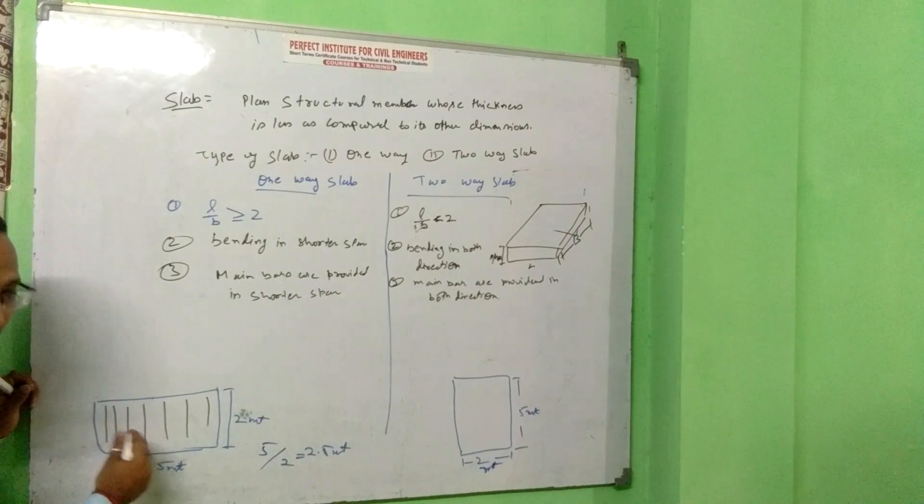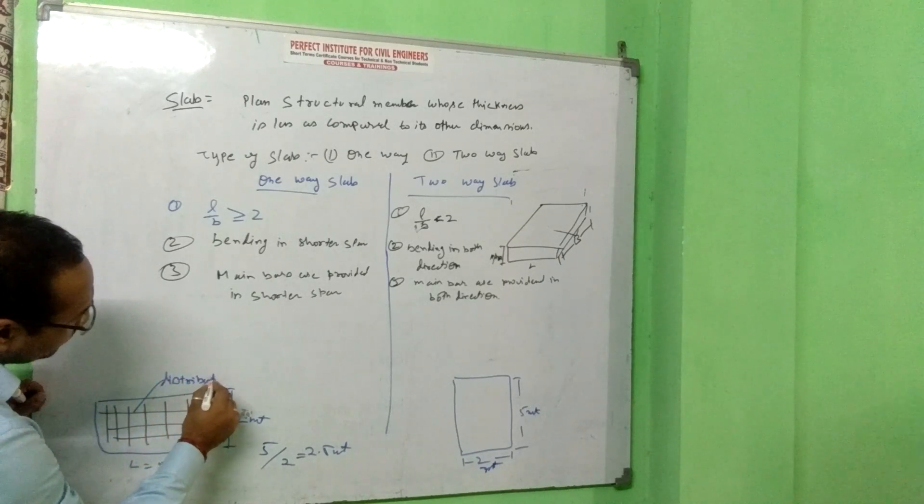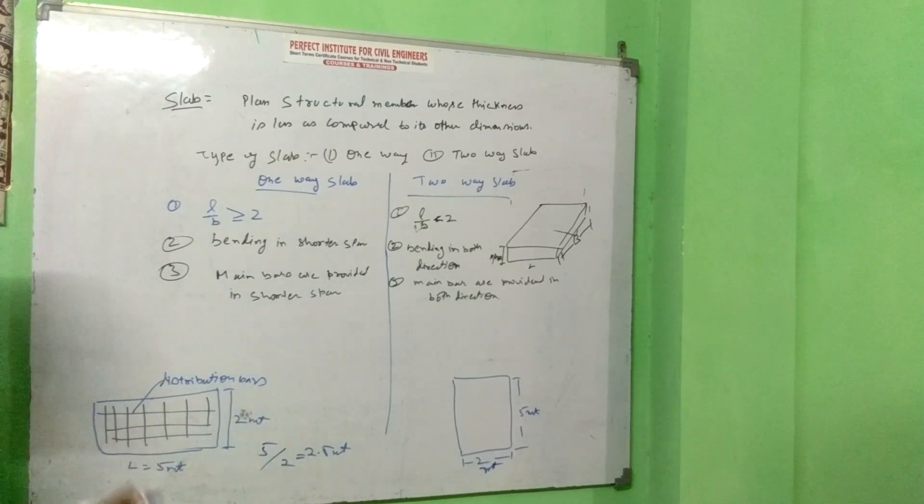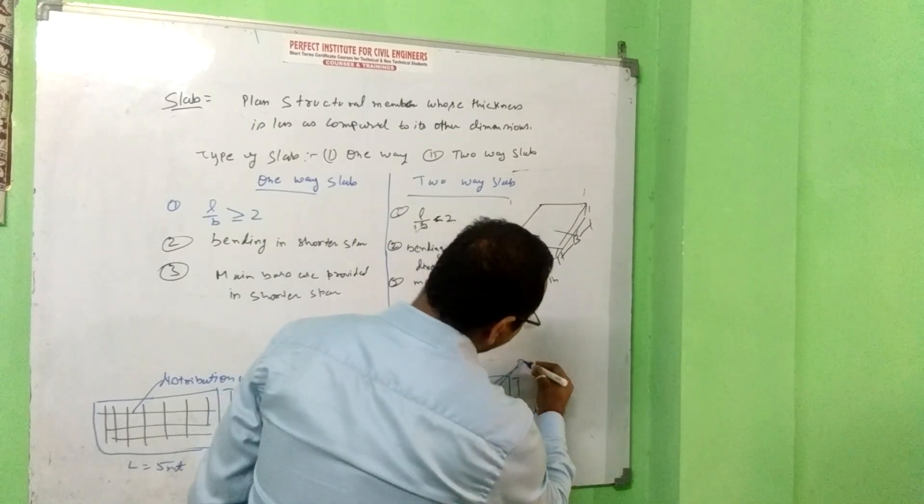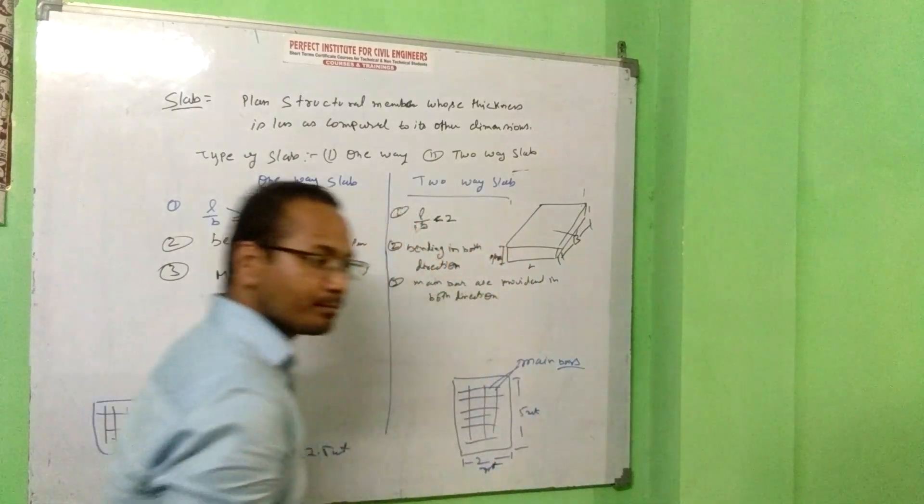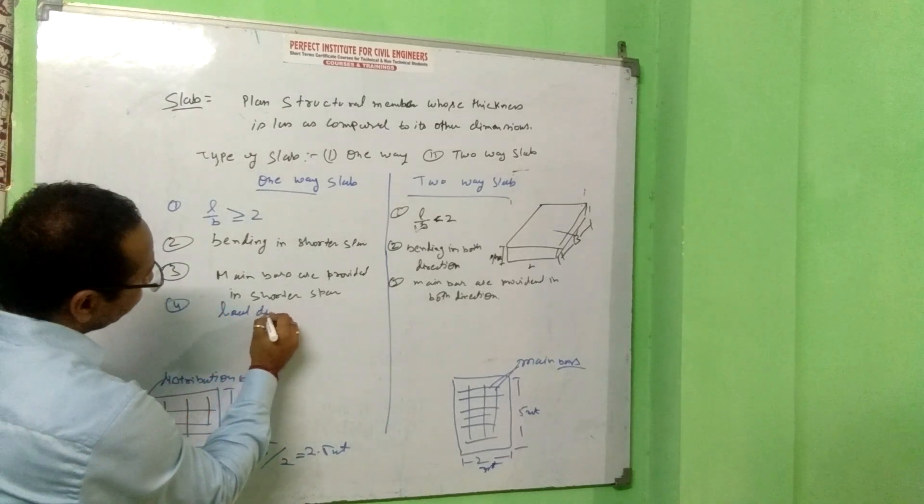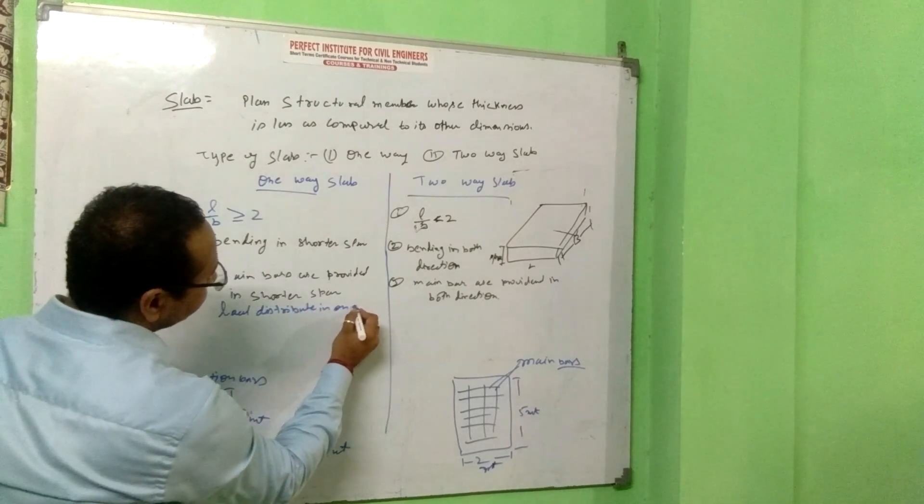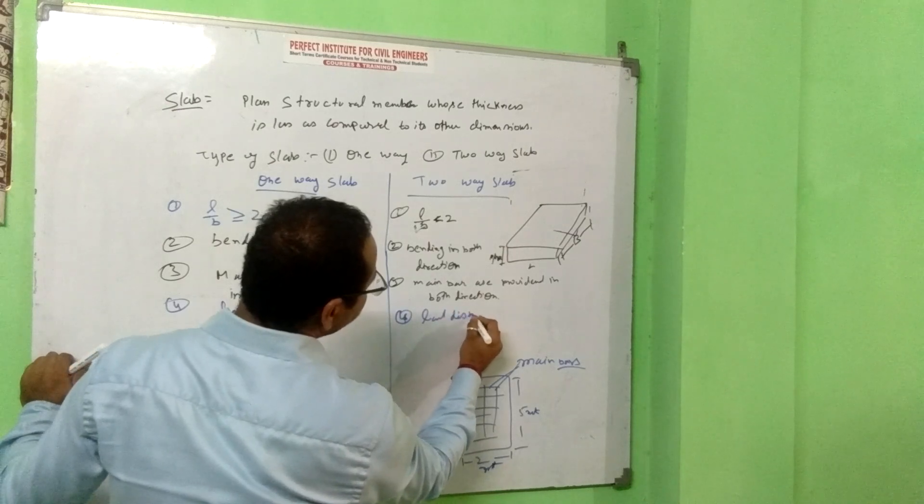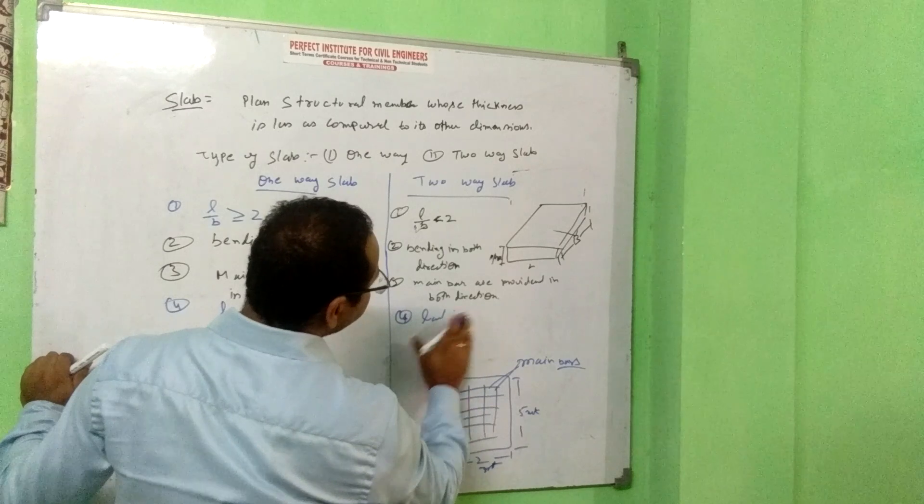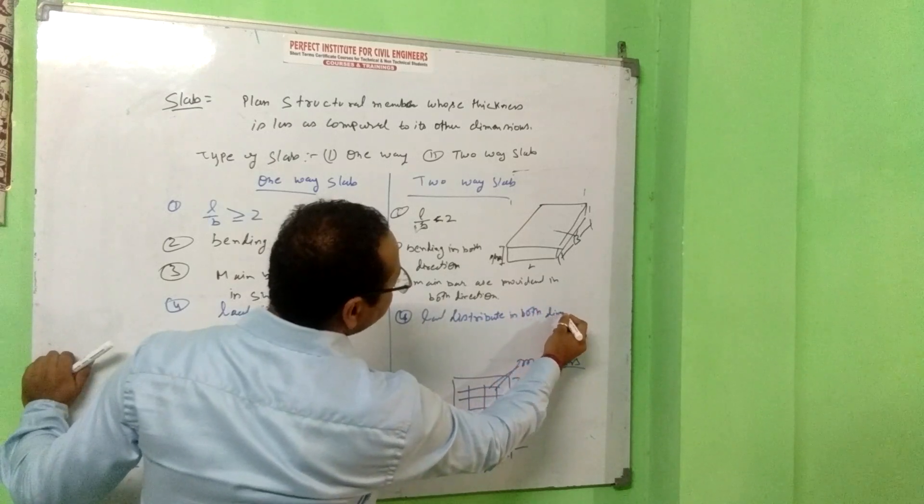Main bar means, main bar direction. And these are called distribution bar. But in this case, both are main bar. In one direction, in this case, is distributed in one direction. Both different, in both.